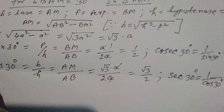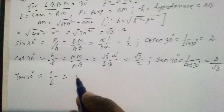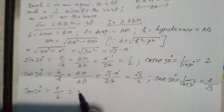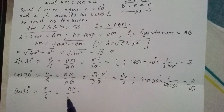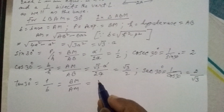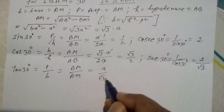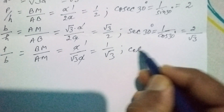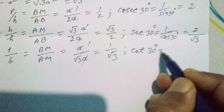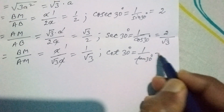For tan 30 degrees, tangent equals perpendicular by base. Here P is BM and base is AM. BM equals A and AM equals √3·A, so tan 30° equals 1/√3. Since tangent and cotangent are reciprocal to each other, cot 30° equals 1 divided by tan 30°, which equals √3.